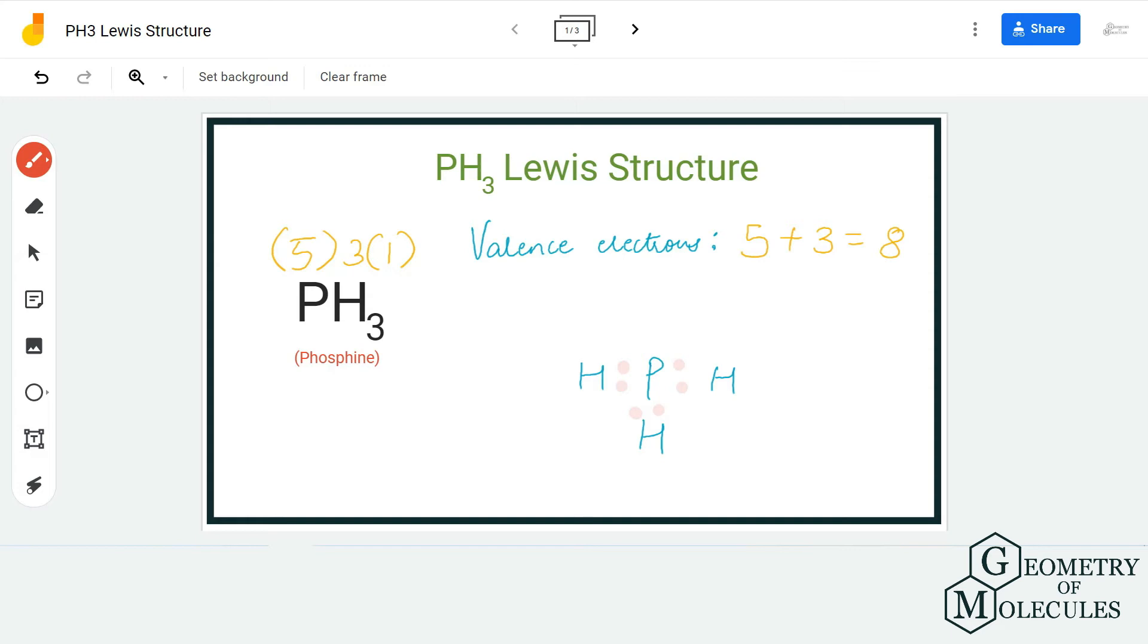So I am going to place these two more electrons on phosphorus atom. And now if you check, all the atoms have complete outermost shells because hydrogen atoms have two valence electrons in its outermost shell and phosphorus atom over here has eight valence electrons in its outermost shell.